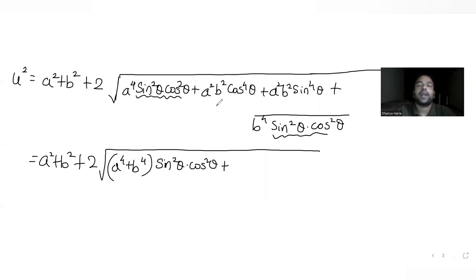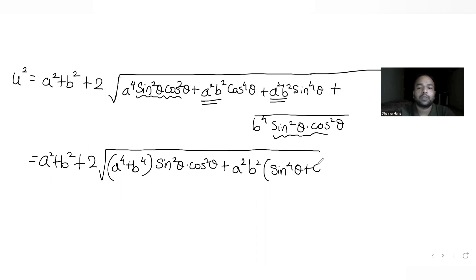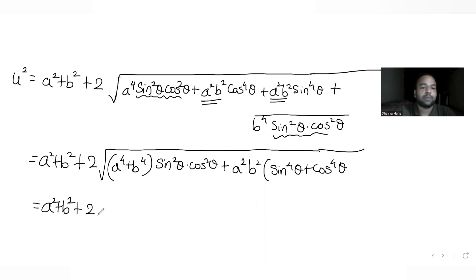From these two terms I can take out a square b square common, giving sin raise to four theta plus cos raise to four theta. So if I try to solve it further, I get a square plus b square plus two times root of the expanded expression with a raise to four, b raise to four, and a square b square terms.